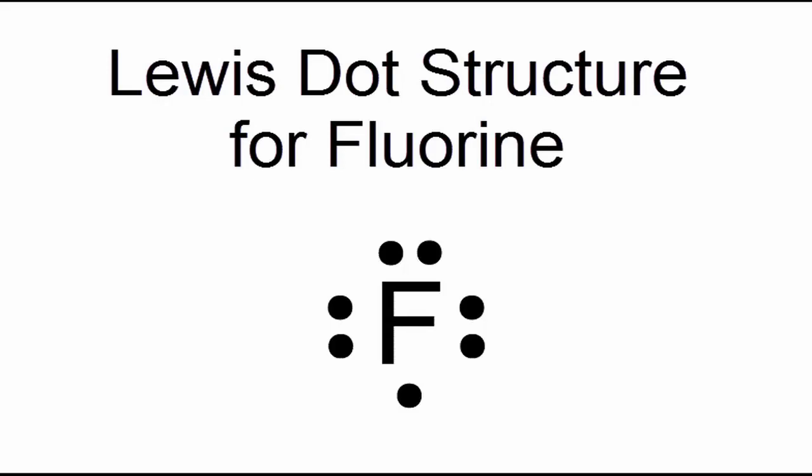Fluorine has seven valence electrons. We'll put the F for fluorine in the center, and then we'll put seven valence electrons around the outside.